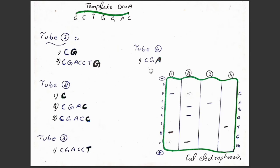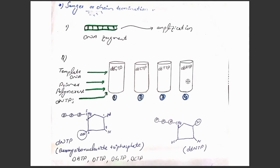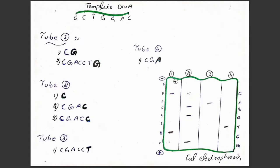In tube 4, we have dideoxy adenine triphosphate, which is the modified adenine. In this tube, normal cytosine will attach to G, normal guanine will attach to C, but to T the modified adenine will attach and further elongation will be stopped. We will get a 3-nucleotide chain: C, G, and modified adenine. The smallest DNA sequence will migrate closer to the positive terminal during electrophoresis, since DNA has a negative charge.